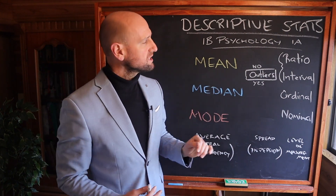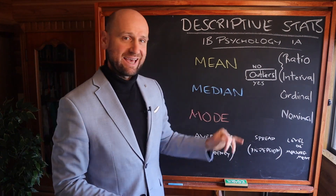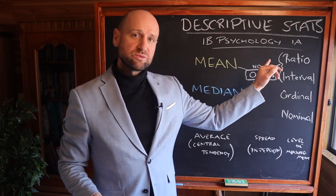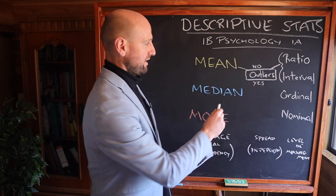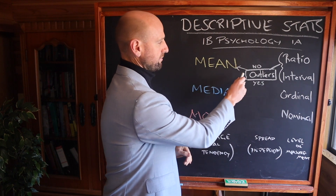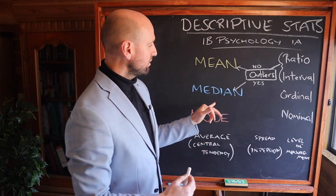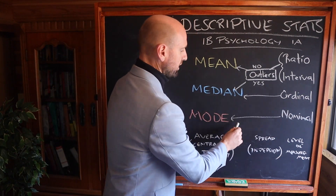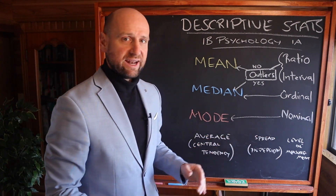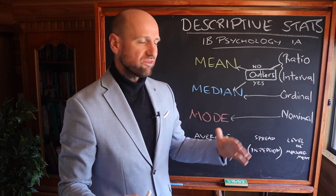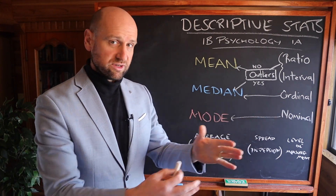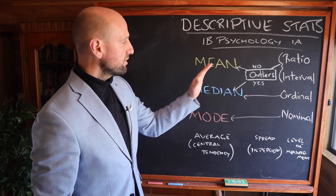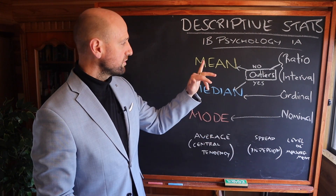You'll choose the mean if your data was ratio or interval and you didn't have any outliers. You'll do the median if your data was ratio or interval and you did have outliers. If your data was ordinal, then you'll do the median. And if your data was nominal, then you'll choose the mode.